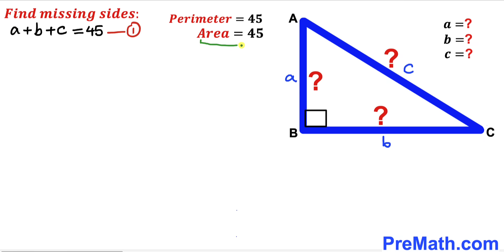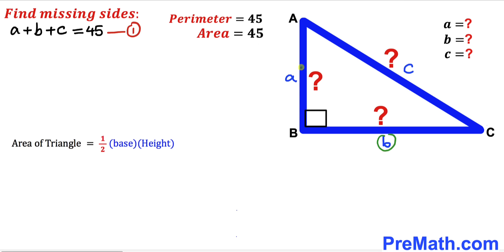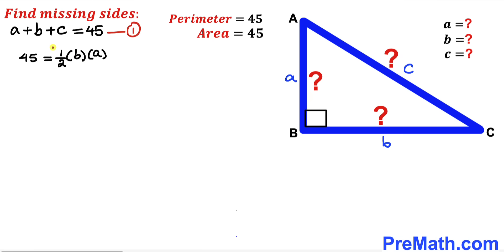We know the area of this triangle has been given to us as 45 as well. The area of a triangle is always equal to one-half times base times height. In our case, the base is b, the height is a, and the area is 45. So: 45 = (1/2)·b·a. Multiplying both sides by 2, we get a times b equals 90. I'll label this as equation number 2.